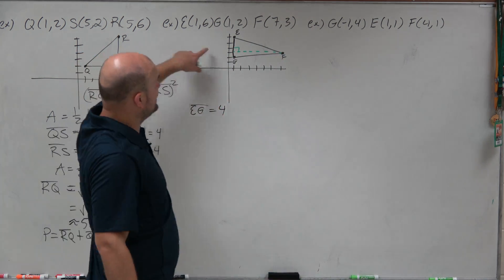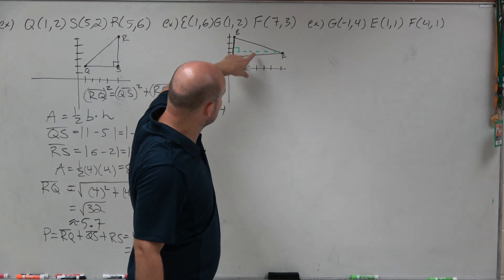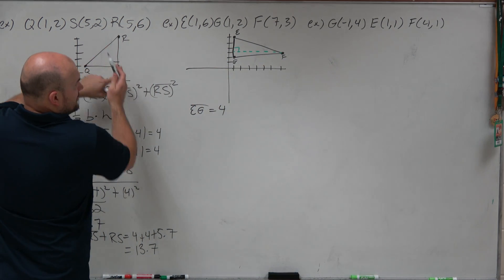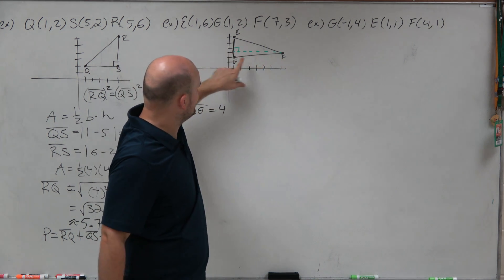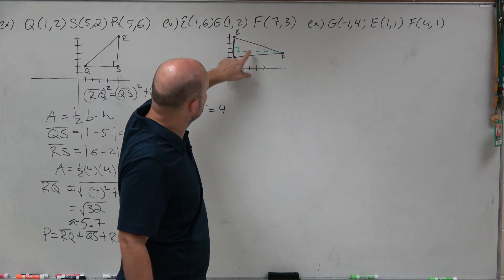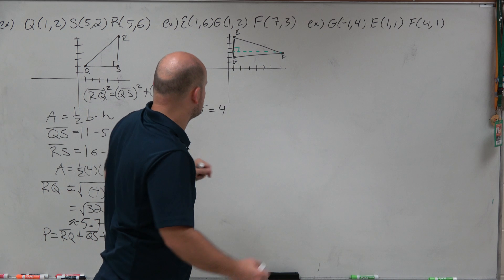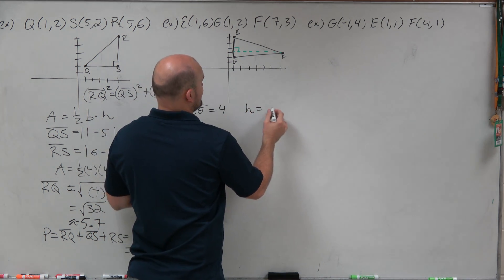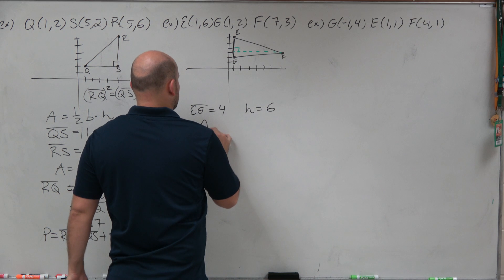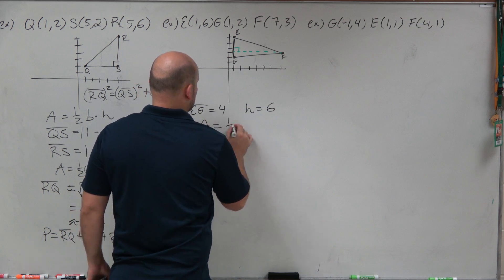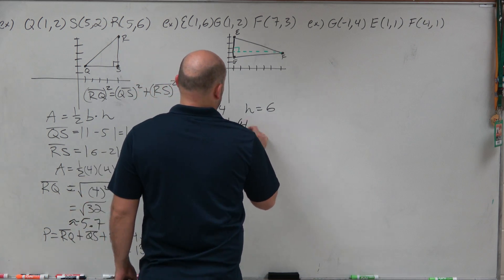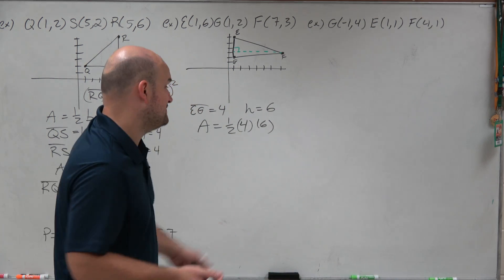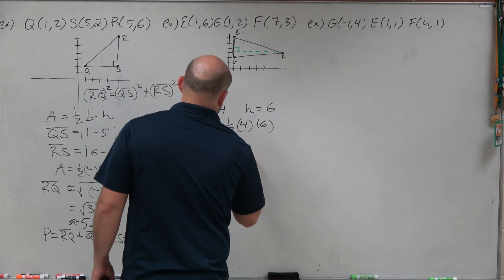Now I need to find the height, which is perpendicular to the base. Counting gives a height equal to six. So the area equals one-half times four times six. Four times six is 24, times one-half equals 12 square units.